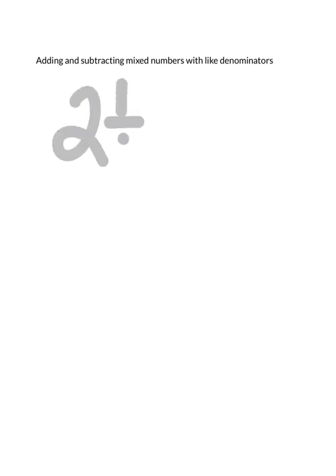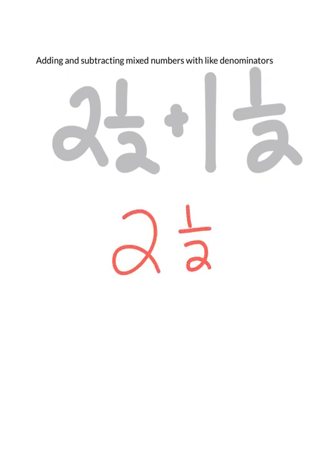So let's say I have 2 1/2 plus 1 1/2. The first thing that you need to do is rewrite the problem vertically. So the first number goes on top, 2 1/2 plus 1 1/2. And both of your whole numbers should line up and your fractions should line up.